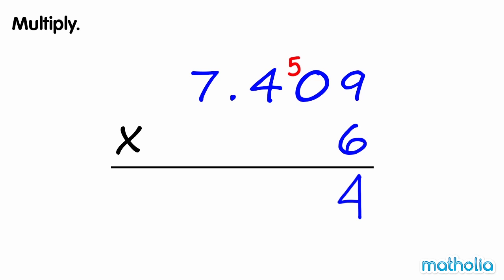Multiply the hundredths. 6 times 0 hundredths equals 0. Add 5 hundredths. Multiply the tenths. 6 times 4 tenths equals 24 tenths. Regroup 24 tenths into 4 tenths and 2 ones. Write the decimal point.